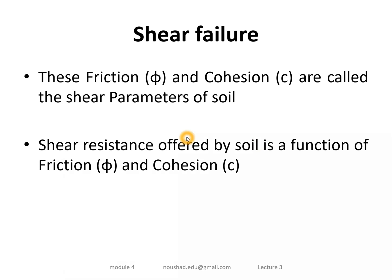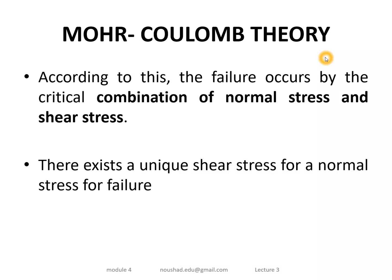Friction (φ) and cohesion (c) are both called the shear parameters. The shear resistance of the soil is a function of these shear parameters — friction and cohesion. According to Mohr-Coulomb theory, failure of the soil occurs by the critical combination of normal stress and shear stress.